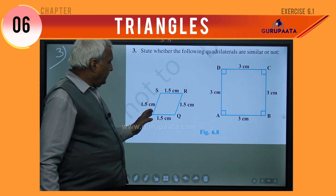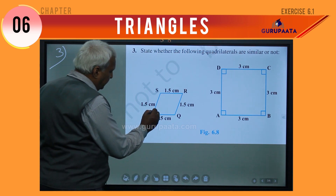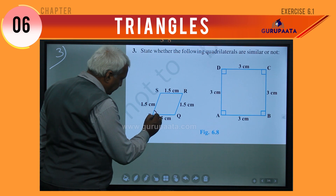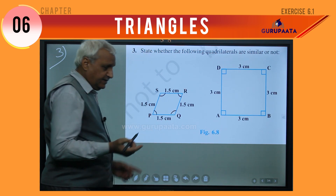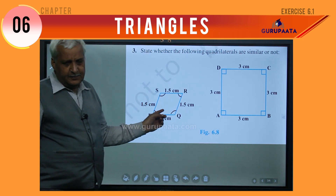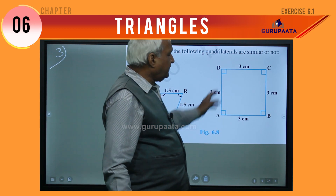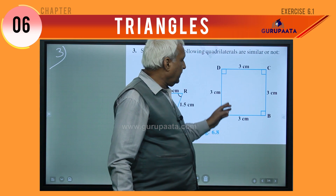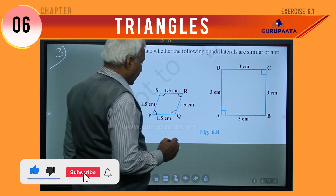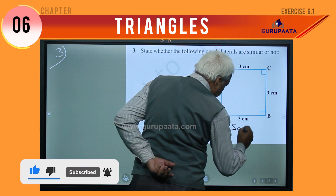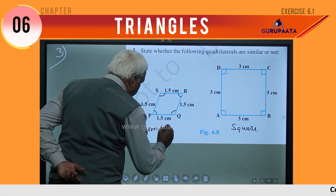Now we concentrate on Question 2(ii) — non-similar figures. Examples include: 1 — scalene triangle, 2 — isosceles triangle, 2 in number.